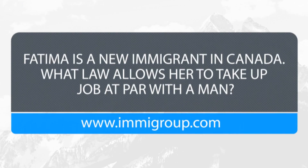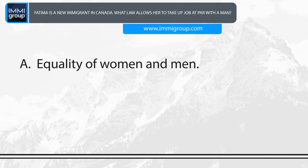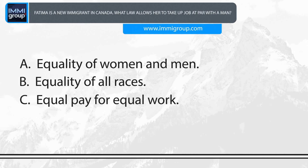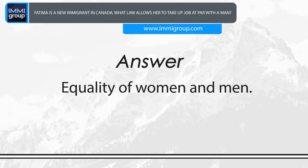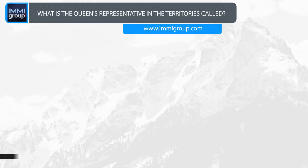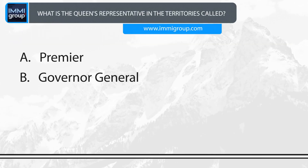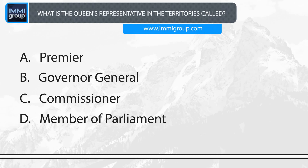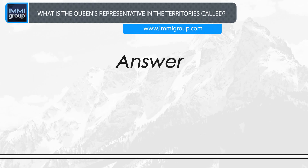What law allows her to take up a job at par with a man? A. Equality of women and men. B. Equality of all races. C. Equal pay for equal work. D. Equal rights. Answer: Equality of women and men. What is the Queen's representative in the territories called? A. Premier. B. Governor-General. C. Commissioner. D. Member of Parliament. Answer: Commissioner.